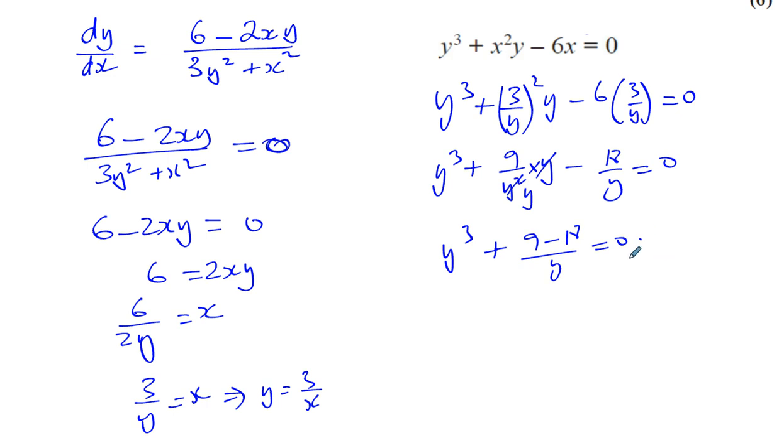You'll have y cubed plus 9 minus 18 all over y equals 0. That gives you minus 9, so you've got y cubed minus 9 over y equals 0.